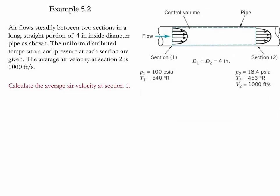Example 5.2. In this example we have air flowing steadily between two sections in a long straight portion of 4-inch inside diameter pipe. The uniform distributed temperature and pressure at each section are given. The average air velocity at section 2 is equal to 1000 feet per second. The problem aims to calculate the air velocity at section 1.